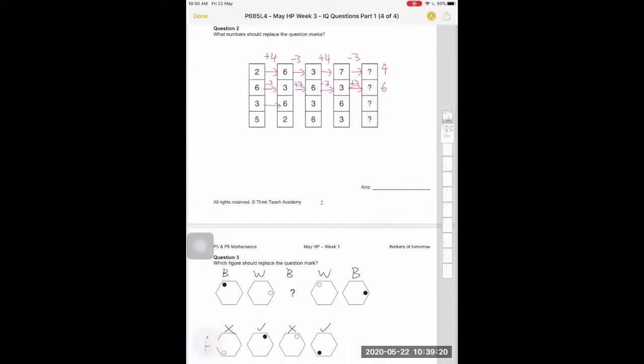For the middle one is the same thing. So you plus three minus three plus three minus three, so you get three. And the last one you minus three plus four, then you minus three you plus four again. Once you do that you get seven. So with that you get your final answer for question two.